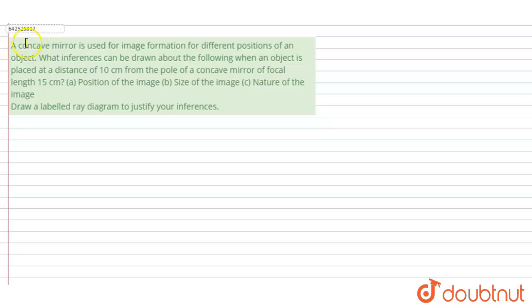Hello students. The question says that a concave mirror is used for image formation for different positions of an object. What inferences can be drawn about the following? When an object is placed at a distance of 10 cm from the pole of a concave mirror of focal length 15 cm.